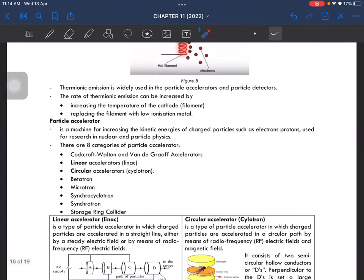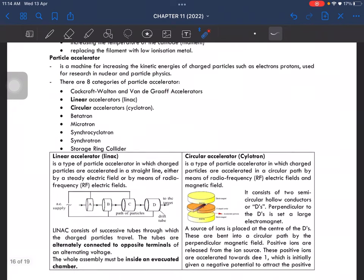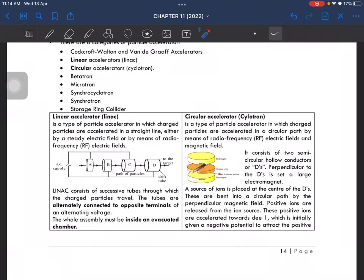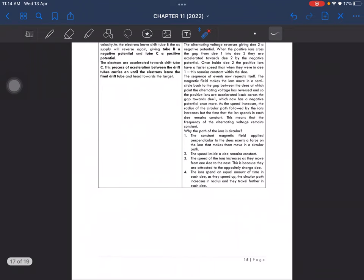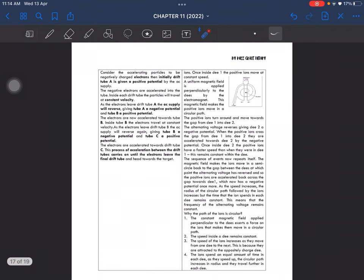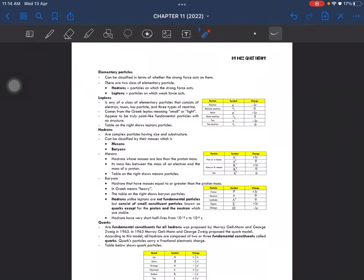Such as electrons and protons, and most of these are used for research in nuclear and particle physics. There are eight categories of particle accelerators. These are some of the eight. I'm not gonna go through this, but basically this is the explanation for each of the categories of particle accelerator. It's a very long explanation.